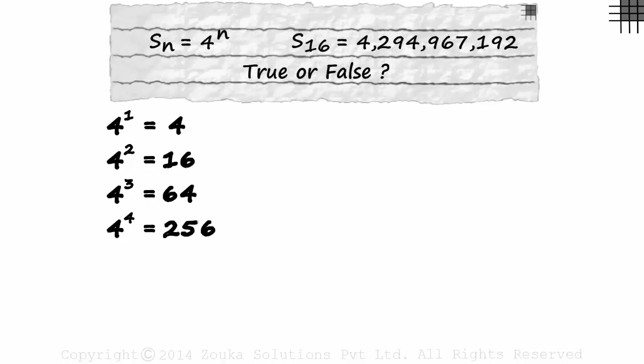Let's solve for two more terms and you will surely get a hint. The fifth term is 1024. And the sixth one is 4096. Now can you say if the answer is true or false? Come on, you should get it now.